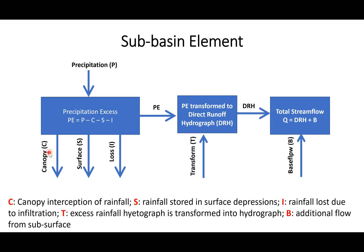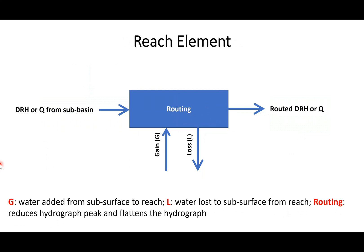Loss methods represent water infiltrating into the ground. These canopy, surface, and loss methods convert precipitation into excess rainfall (direct runoff). From that direct runoff, a hydrograph is created using a transform method — excess rainfall is transformed into a direct runoff hydrograph. Base flow can then be added to the direct runoff hydrograph to obtain total streamflow.